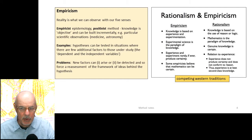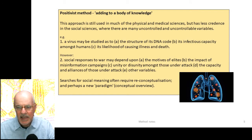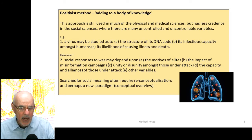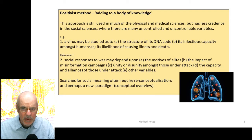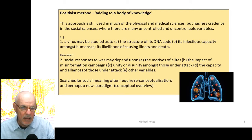Empiricism and rationalism are two currents in the Western tradition. Positivist method — adding to a body of knowledge — is still used quite a lot in the physical and medical sciences, but has less credence in the social sciences where there are so many uncontrolled and uncontrollable variables. For example, in medical science, a virus can be studied for its DNA structure and infectious capacity, but social responses to war depend on the motives of elites, misinformation, unity or disunity, and other variables. Searches for social meaning often require reconceptualization, maybe even a new paradigm.